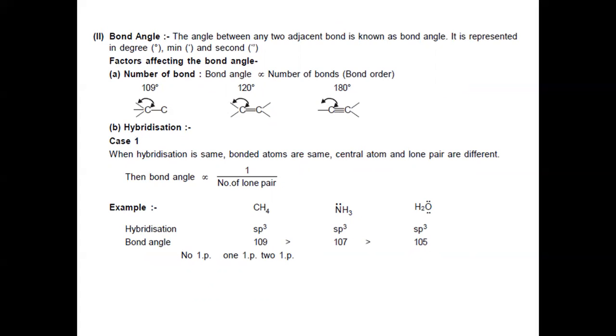The second bond parameter is bond angle — the angle between two adjacent bonds, represented in degrees, minutes, and seconds.